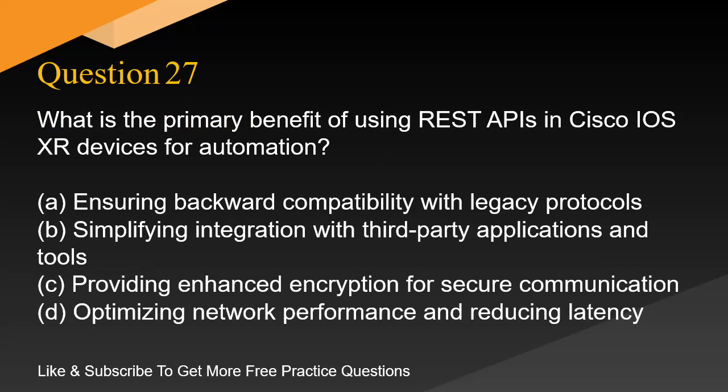Question 27. What is the primary benefit of using REST APIs in Cisco IOS XR devices for automation? A. Ensuring backward compatibility with legacy protocols. B. Simplifying integration with third-party applications and tools. C. Providing enhanced encryption for secure communication. D. Optimizing network performance and reducing latency.